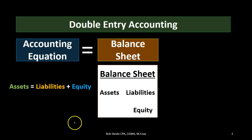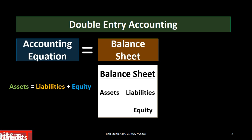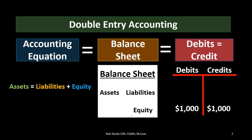The balance sheet consists of three parts: assets, liabilities, and equity. Assets equal liabilities plus equity — that is our accounting equation. The third way is a bit more abstract, and that is in terms of debits and credits.